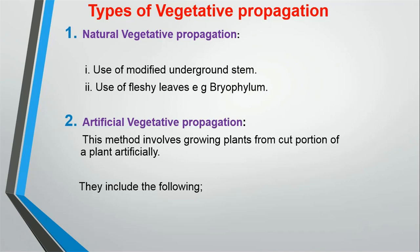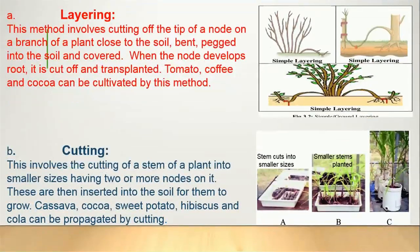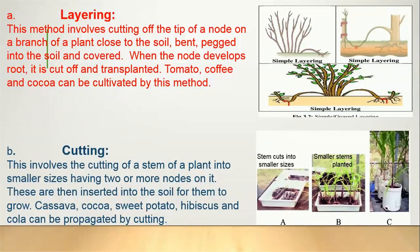The second type is artificial vegetative propagation, which involves growing plants from cut portions of a plant by human intervention. The first method is layering. This involves cutting off the tip of a node on a branch close to the soil, bending and pegging it into the soil, and covering it with soil. After a while, the node begins to develop roots and can then be cut off and transplanted as a new offspring. Tomatoes, coffee, and cocoa can be cultivated by this method.